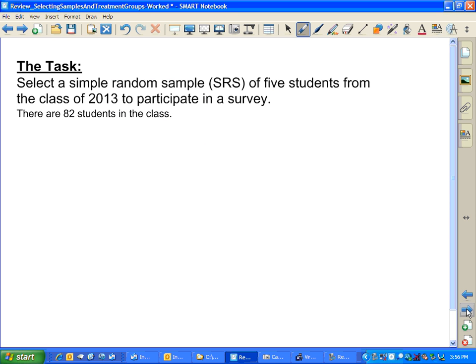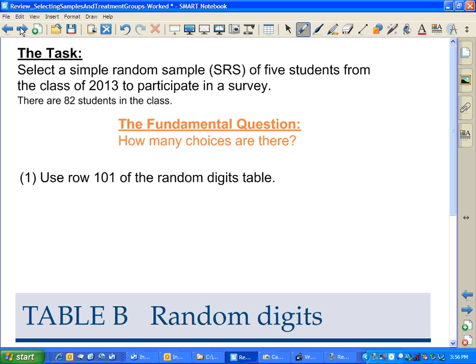The task: select a simple random sample of five students from the class of 2013 to participate in a survey. Note that there are 82 students in the class, which leads to the fundamental question. How many choices are there? The answer: 82 choices in this case.